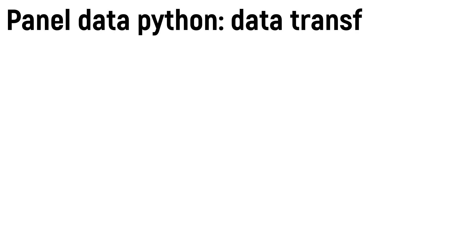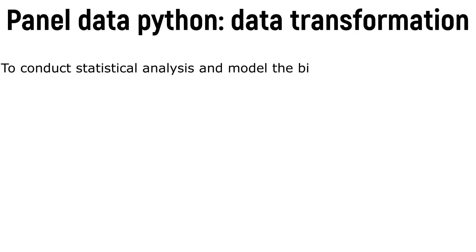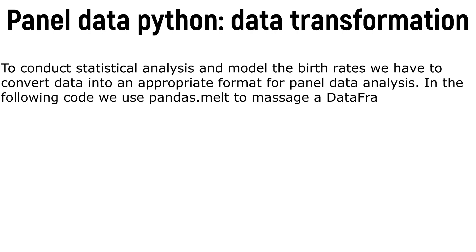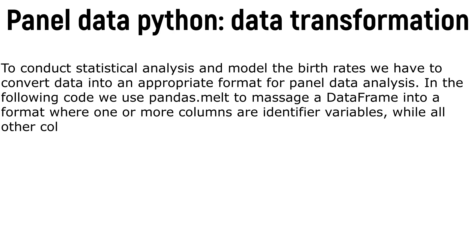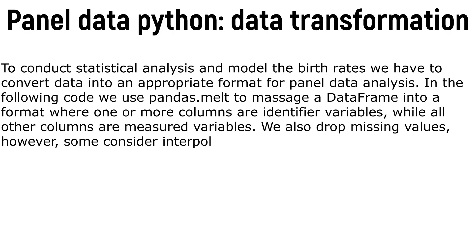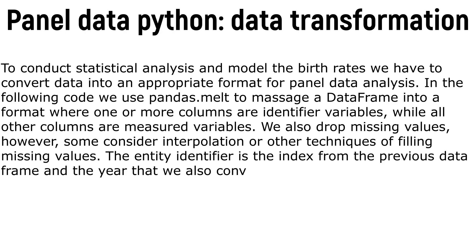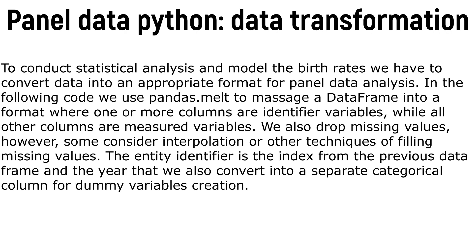Panel Data Python — Data Transformation: To conduct statistical analysis and model the birth rates, we have to convert data into an appropriate format for panel data analysis. In the following code we use Pandas melt to massage a data frame into a format where one or more columns are identifier variables while all other columns are measured variables. We also drop missing values, though some consider interpolation or other techniques for filling missing values. The entity identifies the index from the previous data frame, and the year is converted into a separate categorical column for dummy variable creation.